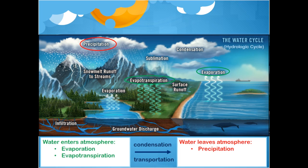Let's look at the water cycle and try to identify the inflows and outflows in the water budget as we go through each step. Water enters the atmosphere through evaporation and evapotranspiration. Once in the atmosphere, it undergoes condensation and transportation before becoming precipitation and leaving the atmosphere. Evaporation and evapotranspiration are always outflows, and precipitation is always an inflow.